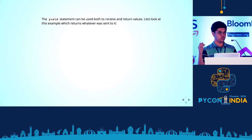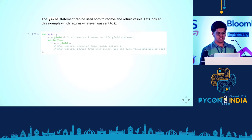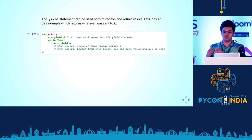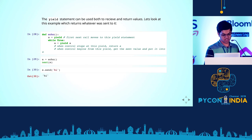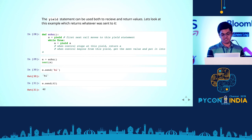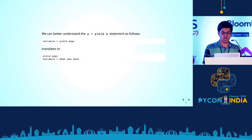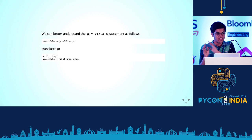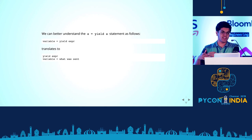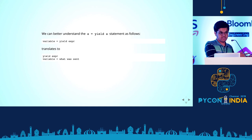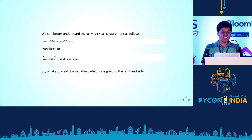You can use one yield statement to both receive stuff and return stuff. A simple echo generator just returns whatever you send into it using `a = yield a`. The way to understand a `variable = yield expression` statement is to split it into two: first, `yield expression` — and then the next statement after that is `variable = whatever you send`. So when you call next and end at this yield, all you do is return whatever you're yielding. When you send something and start from this yield, the left-hand side gets assigned whatever you send. What you yield doesn't affect what is assigned to the left-hand side, despite what the syntax may suggest.